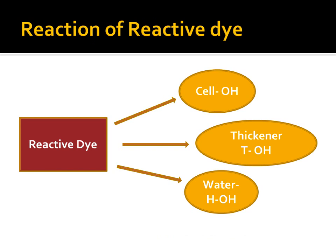The reactive dye gets reacted with cellulose, thickener, and water, because each one of these has a hydroxyl group in its structure. These three reactions take place whenever we use reactive dye. What we want is for the reactive dye to react with cellulose-OH only. We have to avoid its reaction with thickener and also avoid its reaction with water. Only the reactive dye and cellulose reaction is expected, so we can get the desired percent color and the required depth of prints on the fabric. We have to create conditions where only the reactive dye and cellulose reaction should happen during steaming.